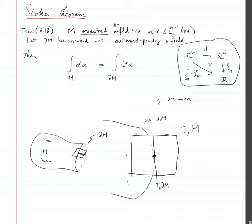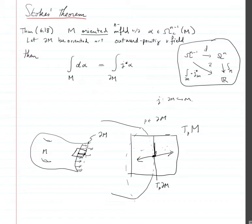This codimension-1 real subspace divides the vector space into two halves: the outward pointing and the inward pointing. The vectors tangent to the boundary we're going to ignore. When we say we have an outward pointing vector field, it means a vector field which at every point on the boundary is pointing outwards.